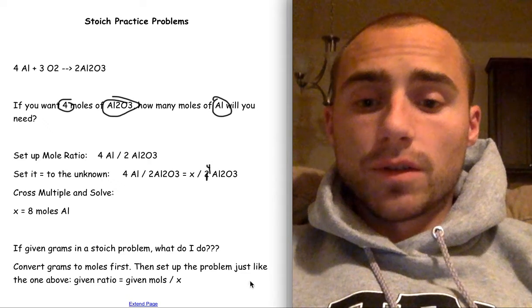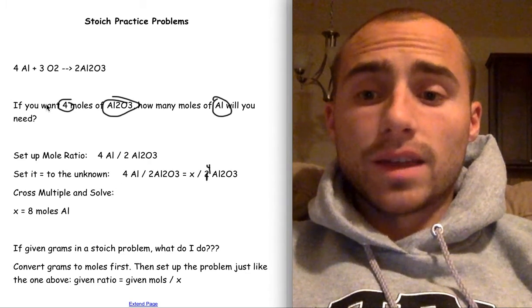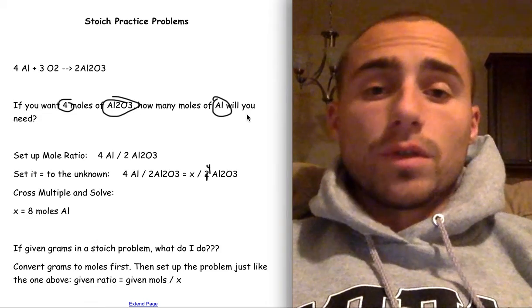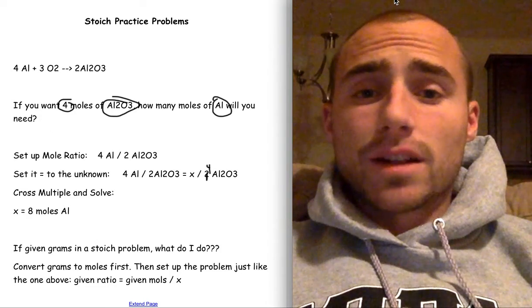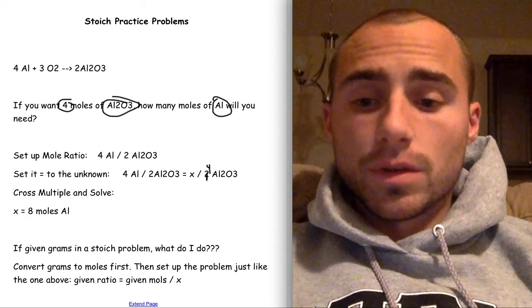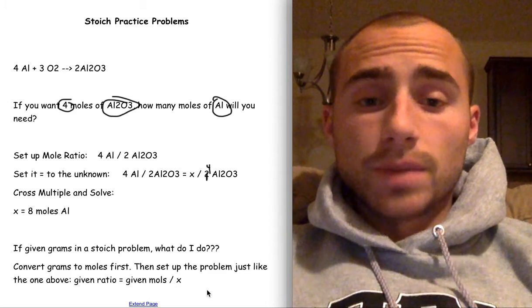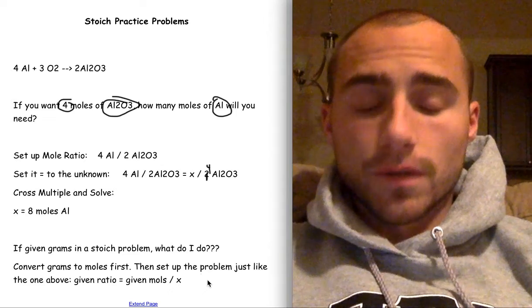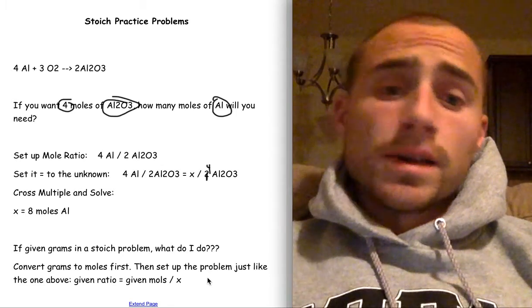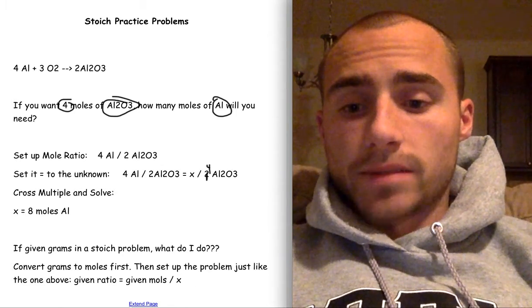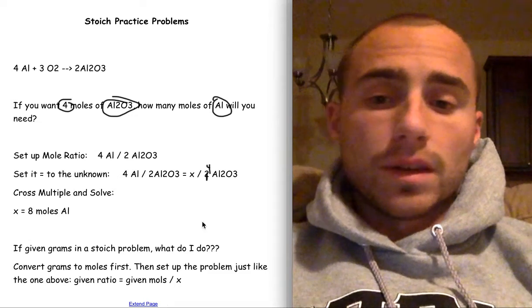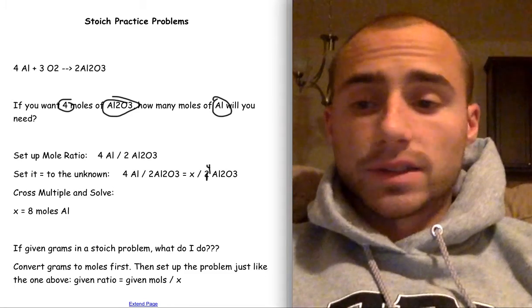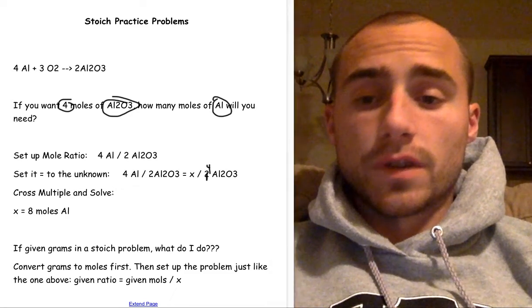Other piece of advice, if given grams in a stoic problem, like this said, if you want 30 grams of aluminum oxide, how many moles of aluminum do you need? Just automatically convert grams to moles using your pink sheet. Always convert grams to moles, and then you will be fine. Just convert grams to moles first, and then you'll be good. And then you just use the method above with the given ratio equals the given number of moles over x. Always convert grams to moles first.